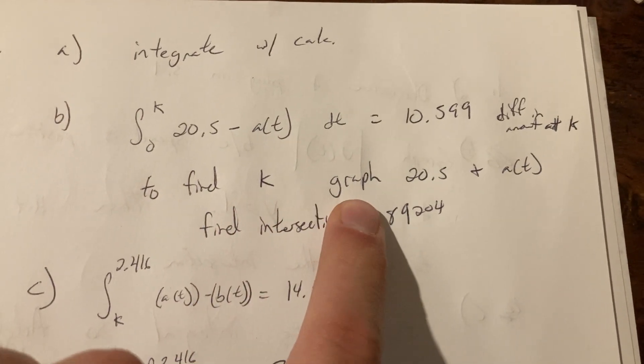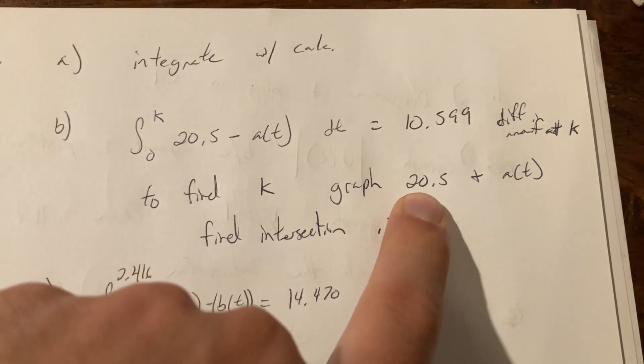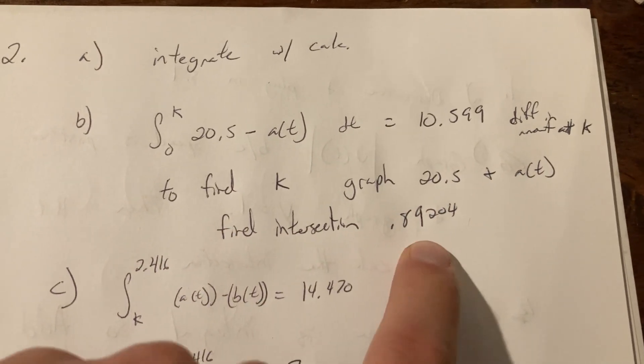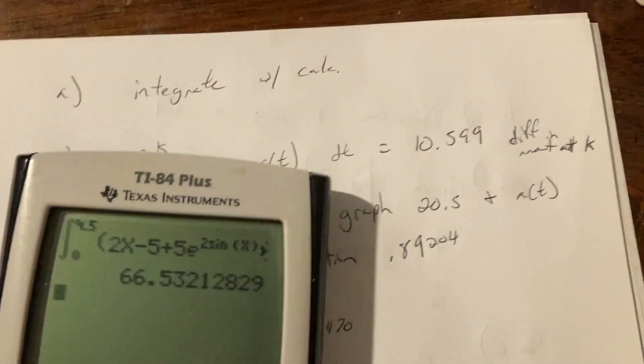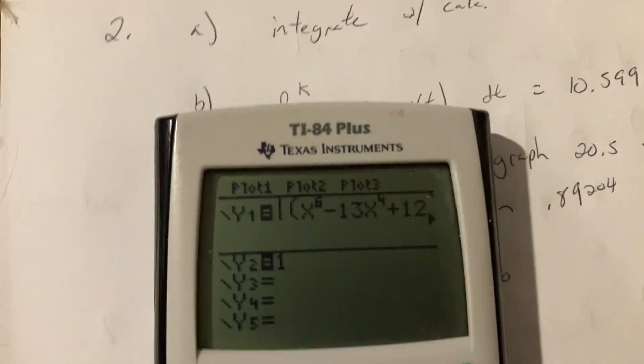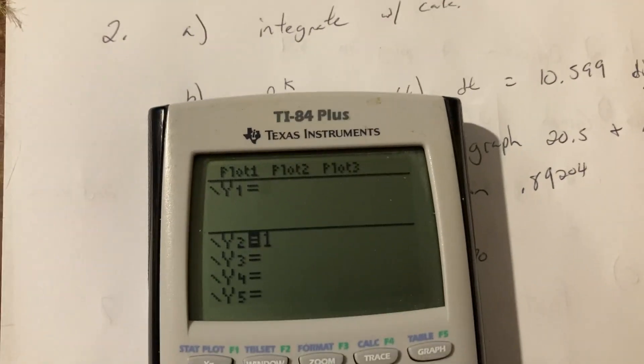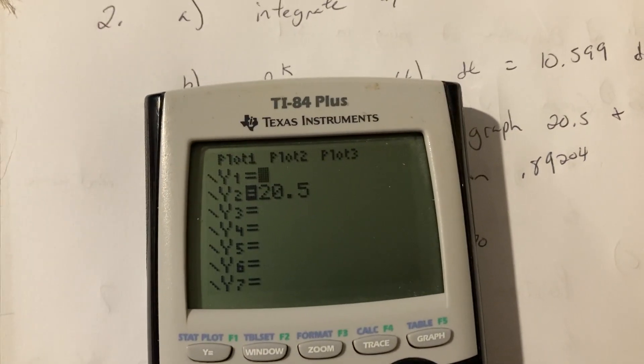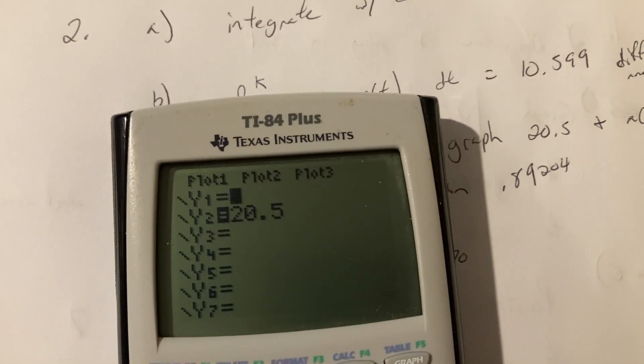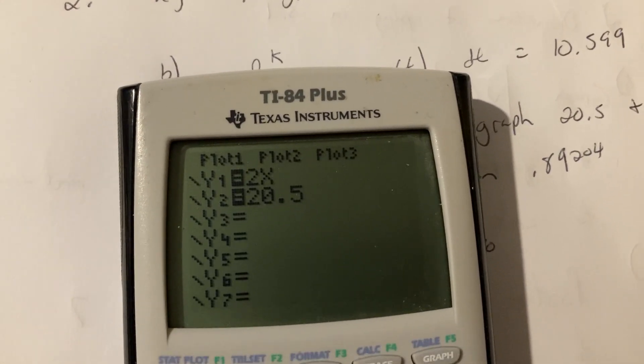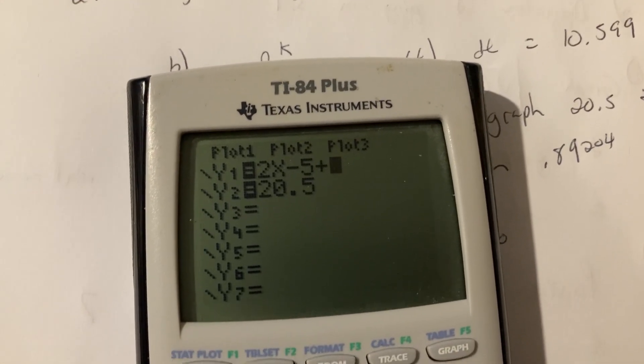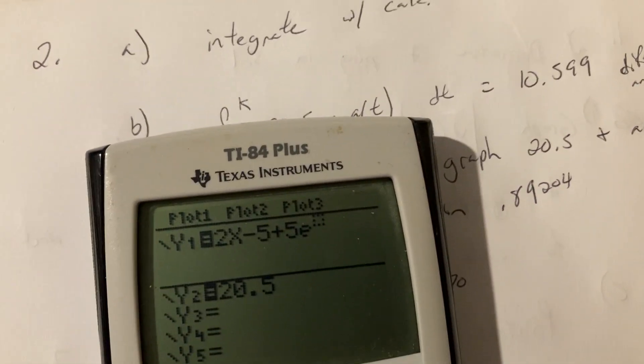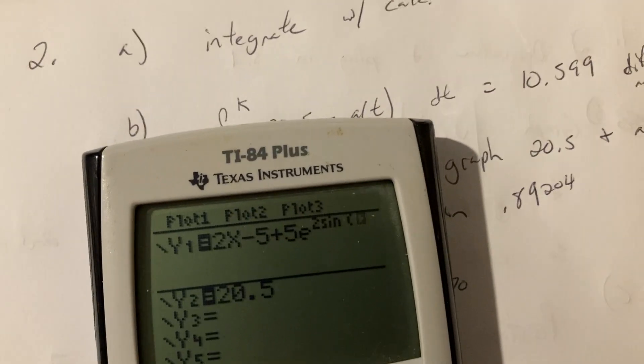So in order to find K, because we got to go 0 to whatever that is, in order to find K we need to do what we did in the last problem. We need to graph 20.5 and a(t) and find the intersection when it ends up to be this guy right here. So there we go. And there's actually a cool cheat or whatever that I'll show you on the calculator hopefully, but here it is.